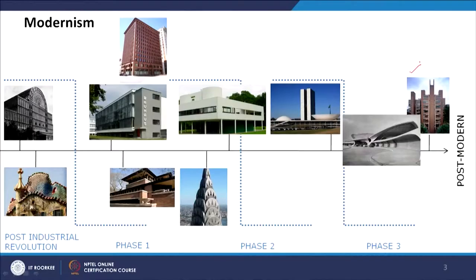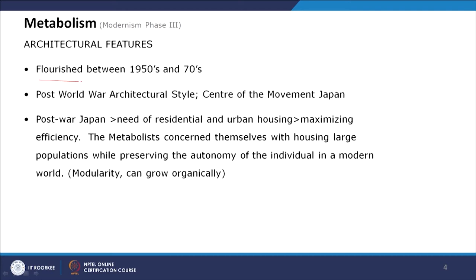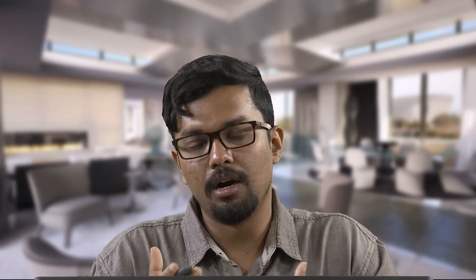One example that falls under both metabolism and brutalism is the Richard Medical Lab designed by Louis Kahn, which we will discuss in detail. The metabolist movement flourished between the 1950s and 1970s — the same timeline as brutalism — so they evolved together in parallel. It is a post-World War II architectural style, and the center of this movement was Japan.